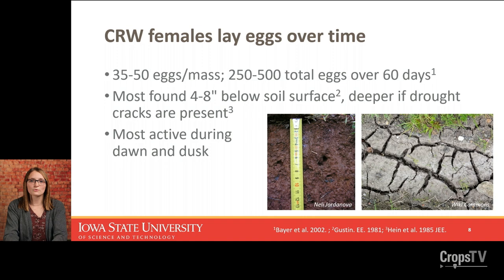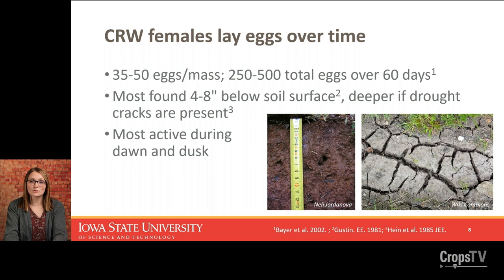Once those adults emerge, one of their primary goals is to mate and lay eggs. Corn rootworm females lay eggs over about a 60-day period during the summer, entering the soil multiple times to lay small clutches of eggs. Those clutches have about 35 to 50 eggs, and typically females lay a total of 250 to 500 total eggs. That's how those populations can really grow over time. Most of those eggs are found about four to eight inches below the soil surface, though they can be closer or deeper, especially if drought cracks are present.